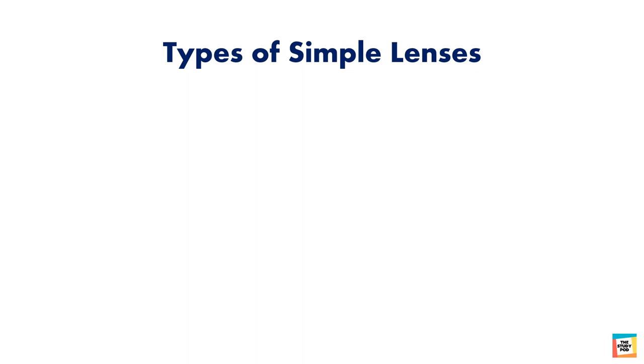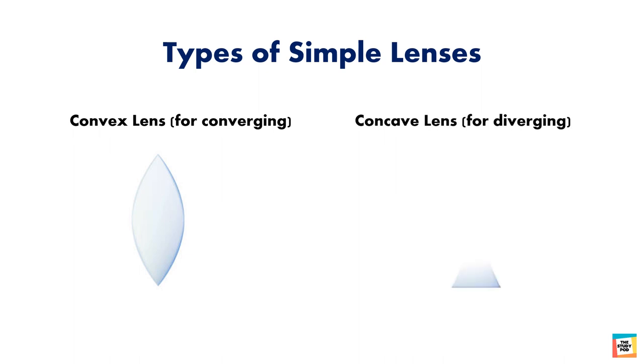There are two types of simple lens. Convex lenses, which enlarge the image, and concave lenses, which are thicker at the edges than the middle and reduce the image.